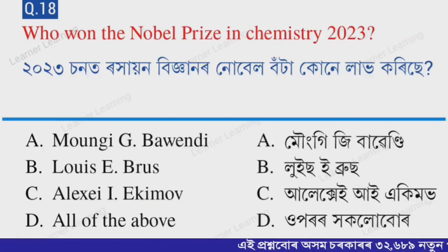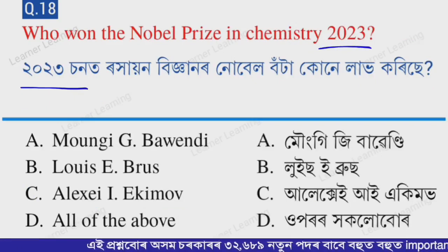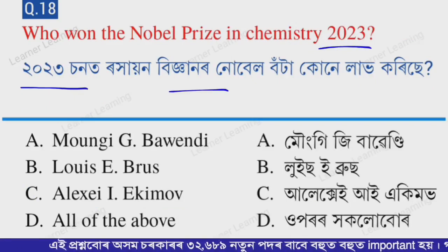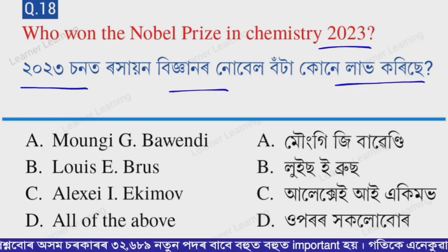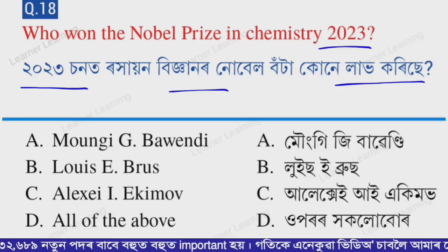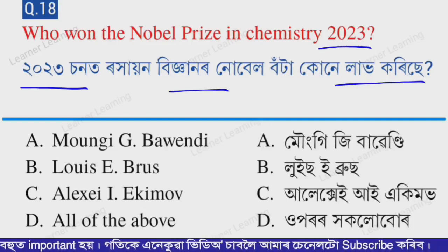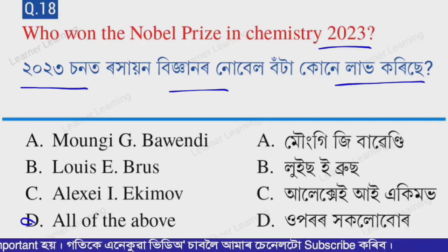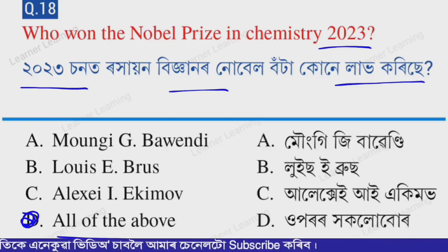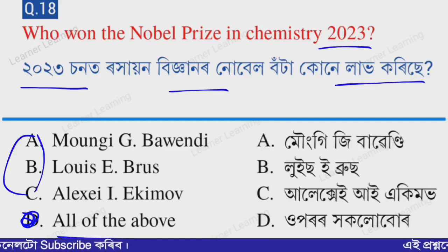Next question: Who won the Nobel Prize in Chemistry 2023? Options: A — Moungi Bawendi, B — Louis Brus, C — Alexei Ekimov, D — All of the above. The correct option is option D — All of the above. Moungi Bawendi, Louis Brus, and Alexei Ekimov all received the Nobel Prize in Chemistry in 2023.